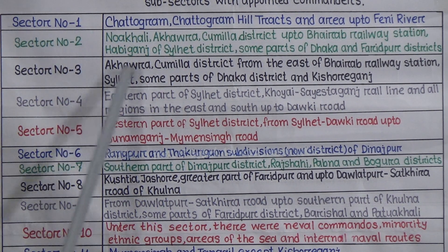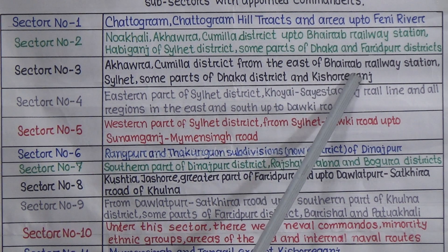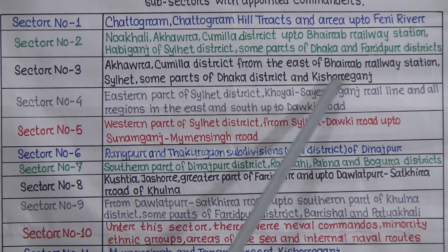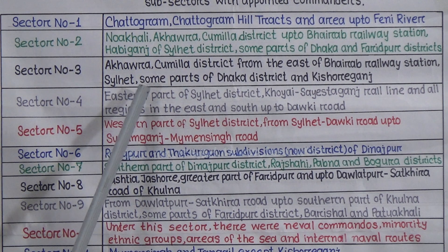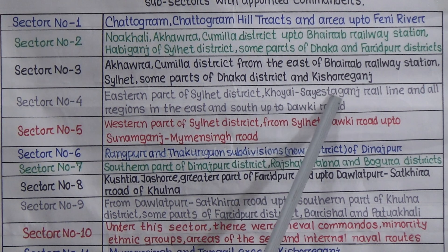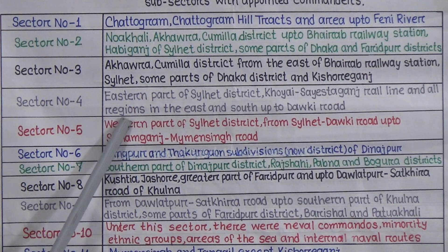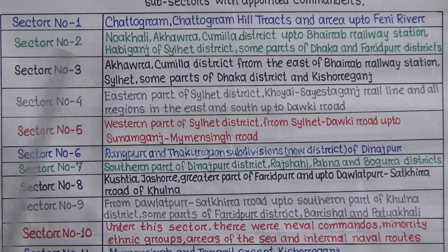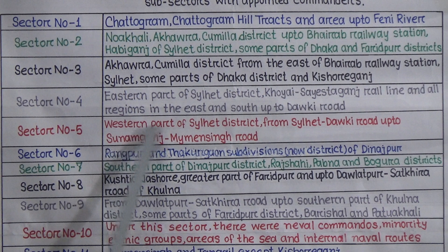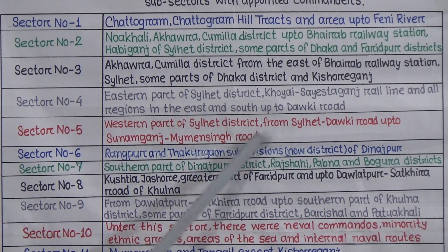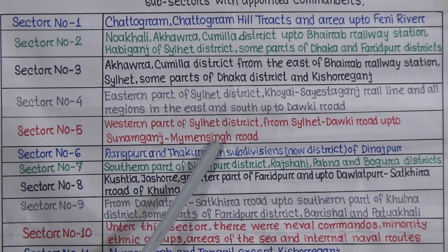Sector 3 included Akhara, Comilla district from the east of Bhairab Bazaar station, Sylhet, some parts of Dhaka district, and Kishoreganj. Sector 4 included the eastern part of Sylhet district, Khoai-Shaistaganj rail line, and all regions east and south up to Dhaka road. Sector 5 covered the western part of Sylhet district from Sylhet-Dawki road up to Shrimangal-Mymensingh road.